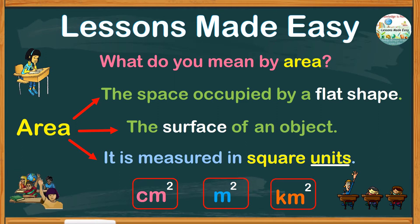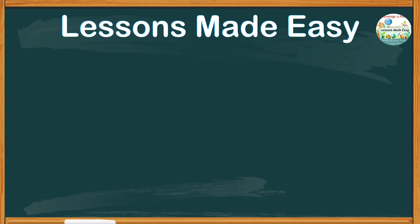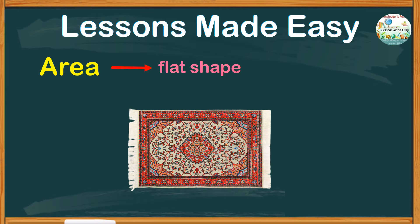To clearly understand what it means, let's take a look at some examples. So what we have said earlier, area is the space occupied by a flat shape. Like the shape of this carpet, for example.